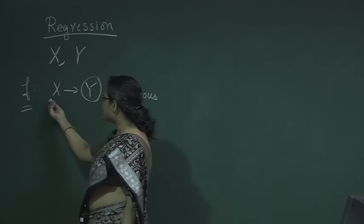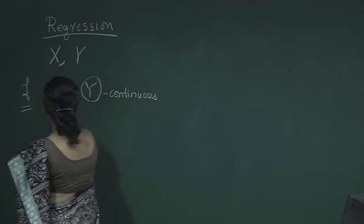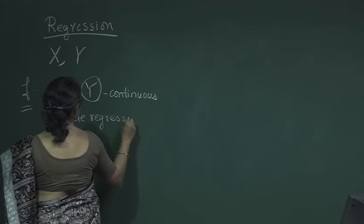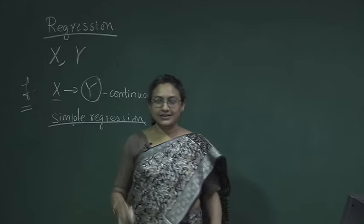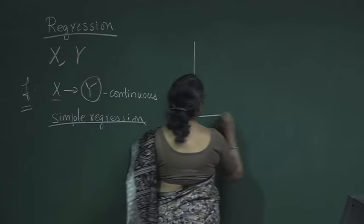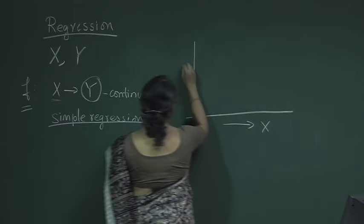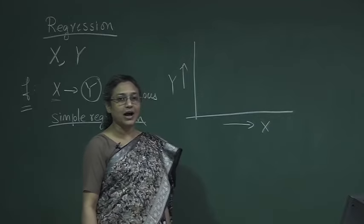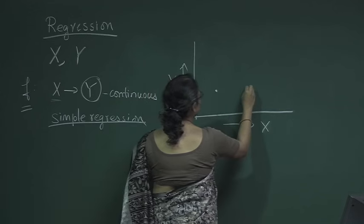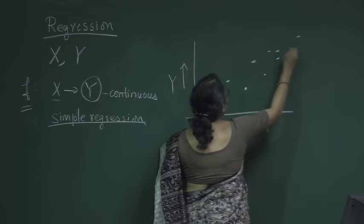Now, x can comprise of a single feature or multiple features. For simplicity, we will first talk about simple regression where x is a single feature. We will also discuss multiple regression where x comprises a number of features. Suppose x is a single feature — the training examples can be plotted with x on one axis and y on the other, and we assume both x and y are continuous valued. So each training example is a point in this space.